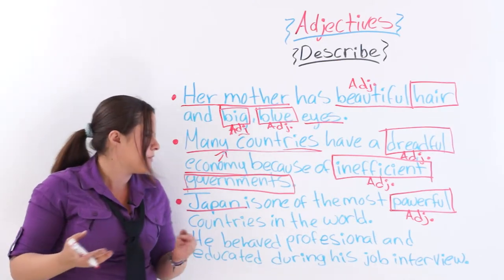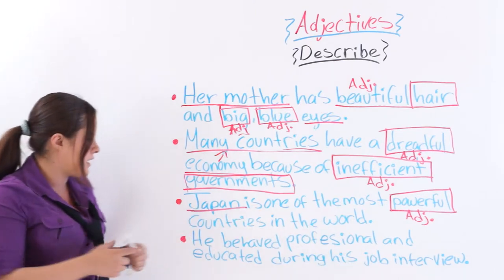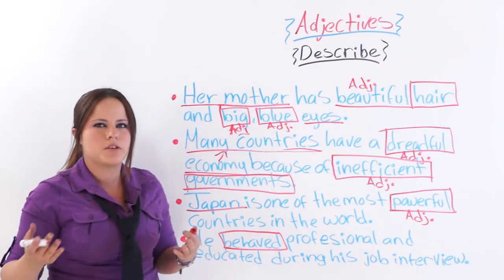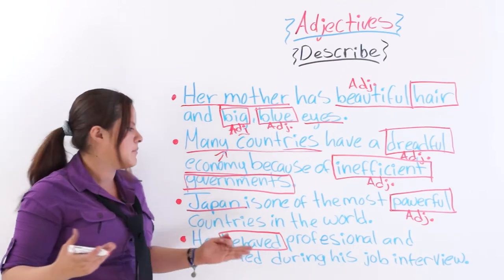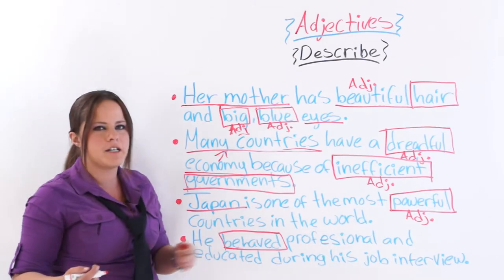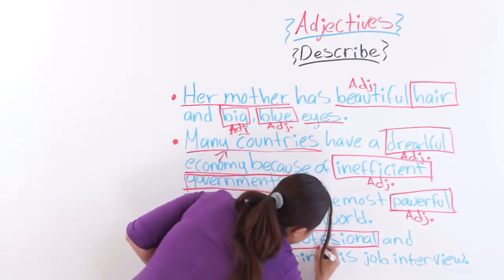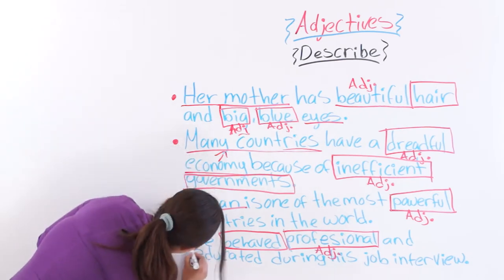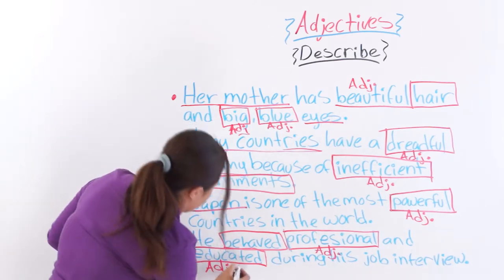The next sentence: he behaved professionally and educated during his job interview. We are describing his behavior, which is an intangible noun — a thing that cannot be perceived by the senses. 'Professional' and 'educated' are the two adjectives describing his behavior.